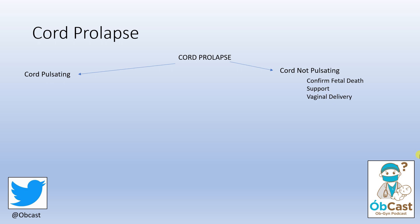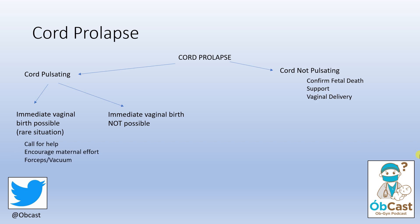Back to cord pulsating: if an immediate vaginal birth is possible — and this is really unlikely — call for help, encourage maternal effort, and have one of your obstetric colleagues do a forceps or vacuum delivery. We're going to focus on the situation where you have a cord prolapse, the cord is pulsating, and an immediate vaginal birth is not possible.